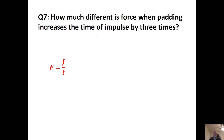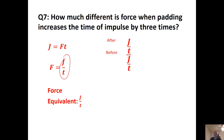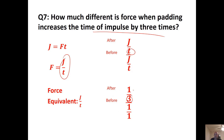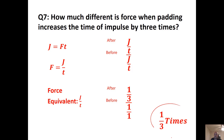How much different is force when padding increases the time of impulse three times? Rearrange J = Ft for force: F = J / t. Set up the ratio with after over before — impulse stays the same, but time becomes 3. The answer is one-third times the original force. So if force was 100 before, it would be 33.3 afterward.